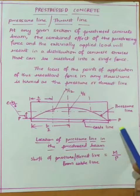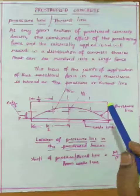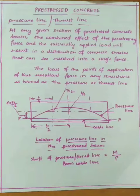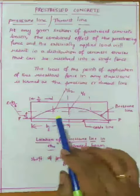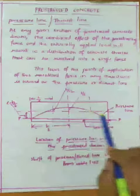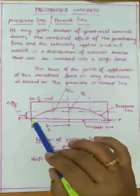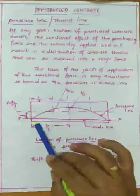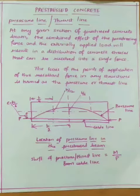In this beam we can see there is a prestressing force and there will be externally applied loads. Both of them will result in stresses in the concrete, and those stresses can be resolved into a single force. At various sections we will get different resultant forces. If we take the locus of the points of application of that resultant force in any structure, then we will get this pressure line or the thrust line.